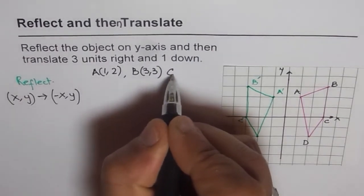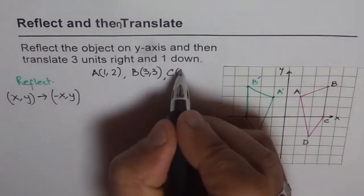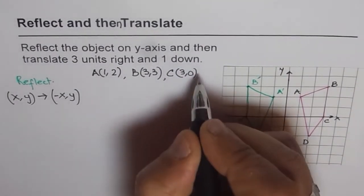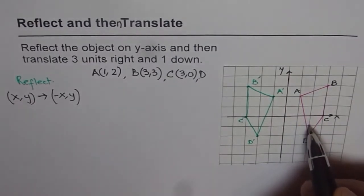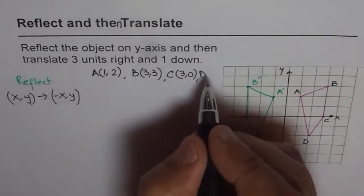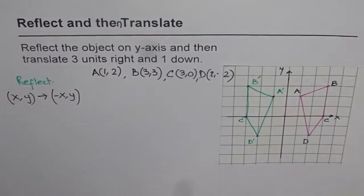For C, the coordinate points are (3, 0), three for x and zero for y. And for D, the coordinate points are (2, -2).